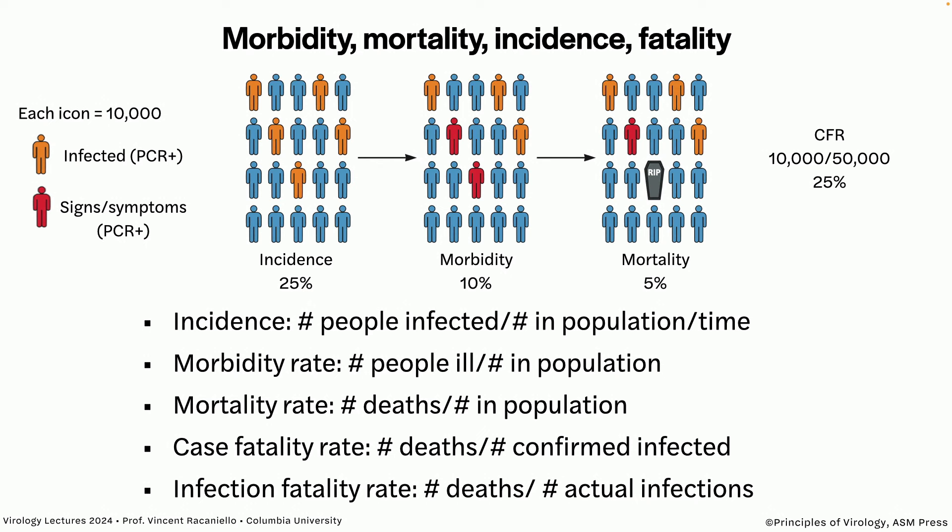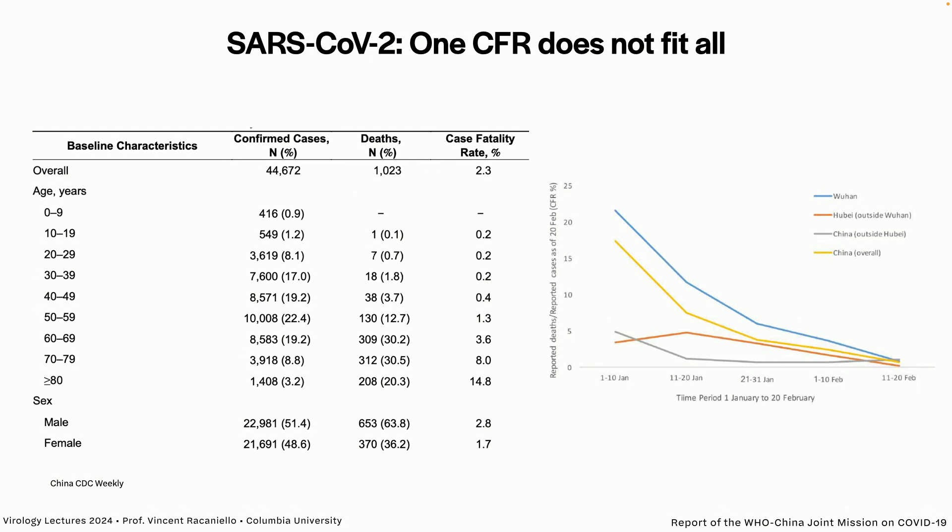Let me show you why if someone says this virus has a case fatality rate of 50%, you shouldn't necessarily worry. The press will say this virus is highly lethal compared to one with a 1% CFR — that's wrong to conclude. Here are numbers from China in the first months of the COVID pandemic, after 44,000 confirmed cases. There were 1,000 deaths — a CFR of 2.3%. But if you stratify by age, the CFR goes up with age. If you're over 80, it's 15%. The virus is the same; the host is different.